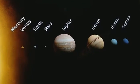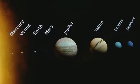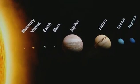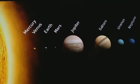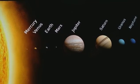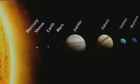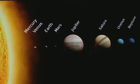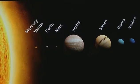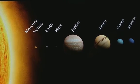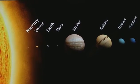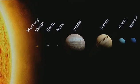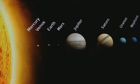Now, what is a planet? A planet is a heavenly body that revolves around a star. And what is a satellite? Satellites are heavenly or celestial bodies which revolve around a planet. Always remember this fact: planets always revolve around a star, and satellites revolve around a planet.